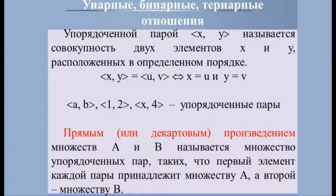Прямым (декартовым) произведением двух множеств A и B называется множество упорядоченных пар, таких что первый элемент каждой пары принадлежит A, а второй — B. В общем случае прямым произведением n множеств a1, a2, ..., an называется множество упорядоченных наборов (a1, a2, ..., an) длины n, таких что i-й элемент принадлежит множеству a_i. Отношение R называется бинарным на множестве A, если R ⊆ A × A. При этом вместо записи (x, y) ∈ R часто пишут xRy. Если R ⊆ A × B, то говорят, что R определено на множествах A и B.